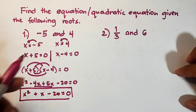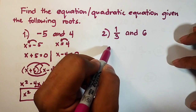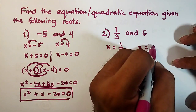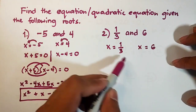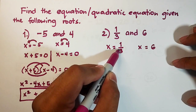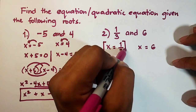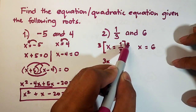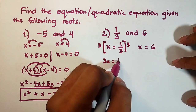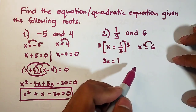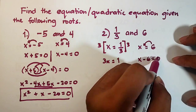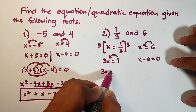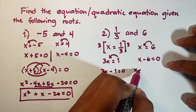For number 2, the roots are 1 third and 6. So x is equal to 1 third, and x is equal to 6. For the fraction, we cross multiply by 3: 3x equals 1, so 3x minus 1 is equal to 0. For the other root, transposing 6 gives x minus 6 is equal to 0. We express these as factors: 3x minus 1 times x minus 6 is equal to 0.